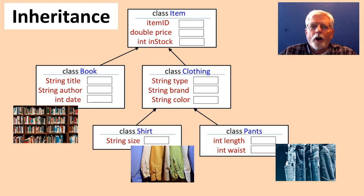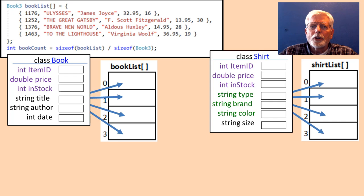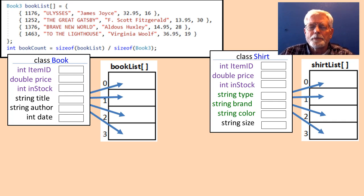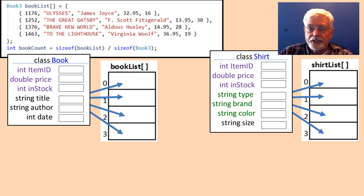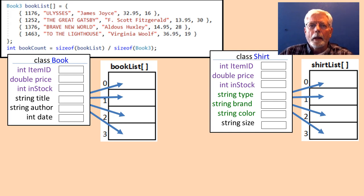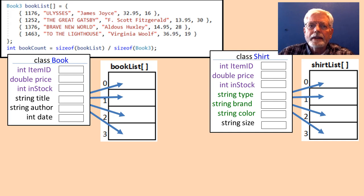The derived classes inherit all the public and protected data and member methods that the base class makes available. We were also able to show how an array filled with book objects can be created and a separate array of shirt objects can be created. But those objects were not able to be placed in a single array because all elements in an array must be the same data type. By implementing polymorphism, we will be able to create an array with the data type of the base class and place in it objects of any of its derived classes.